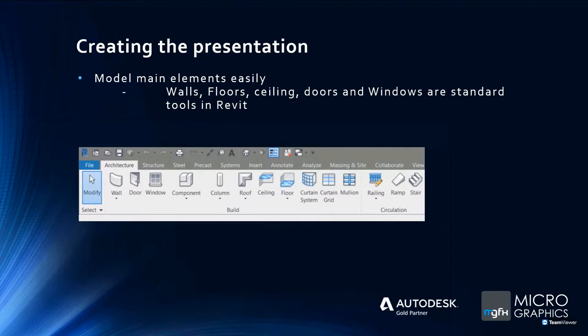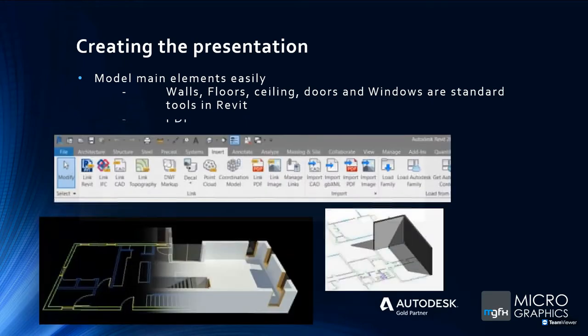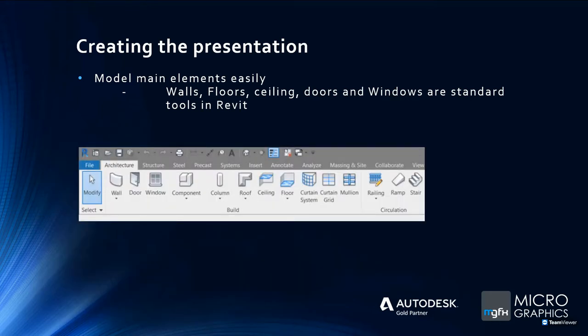Once you've imported the information, you can start creating your components — be it walls, floors, ceilings, and that sort of thing. The beauty of Revit is it's designed for that. It has out-of-the-box tools to create walls, doors, windows, floors, ceilings, and it's very easy to model and self-explanatory. You might need some training just to get going faster, but creating the geometry is very quick and easy.